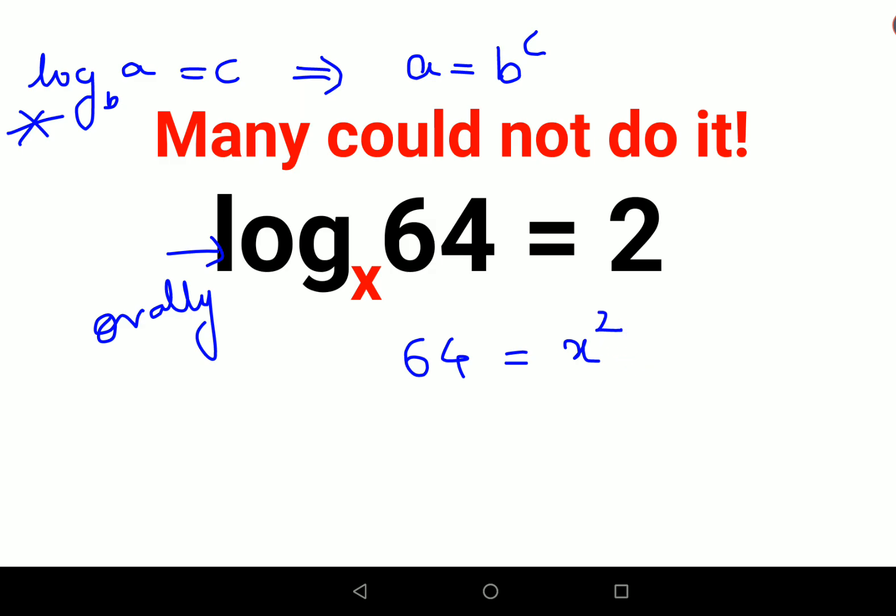Now 64 is nothing but 8 square, and this is also x square, right? So taking square root on both sides, x equals to 8. That's your answer.